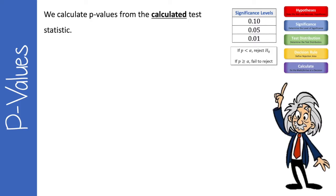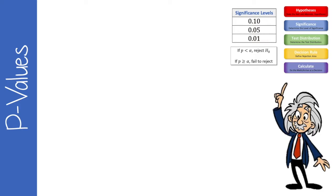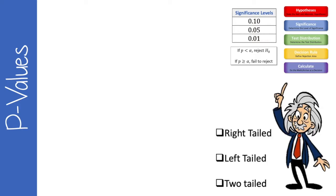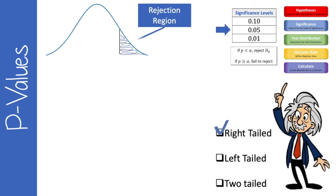We calculate p-values from calculated test statistics — that's part of step 5 — but for today's lesson we'll practice with z-values I give you. Recall from our previous lesson there are three types of hypothesis tests: right-tailed, left-tailed, and two-tailed. Let's look at a right-tailed test at the 0.05 significance level. On the normal curve, we're looking for extremes on the right side, which is the rejection region, and the area there is 0.05.